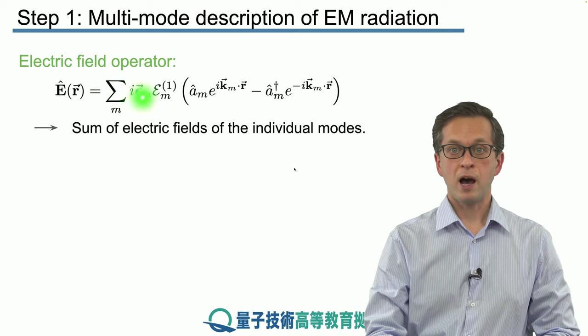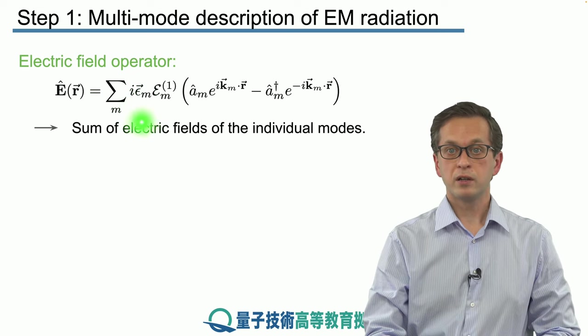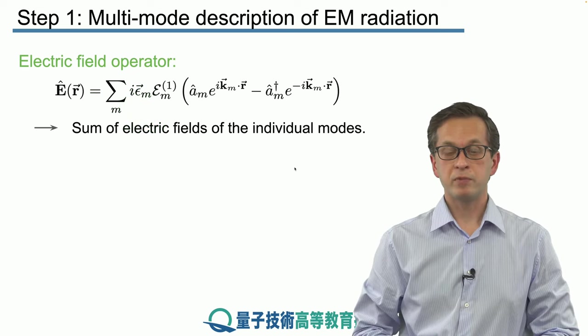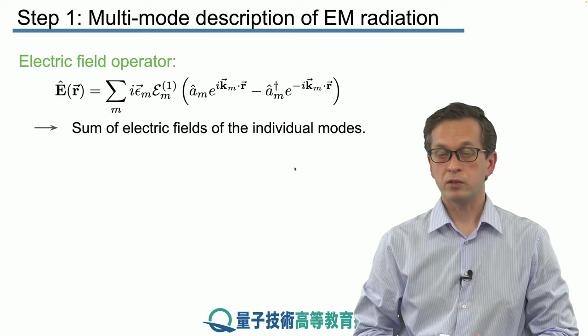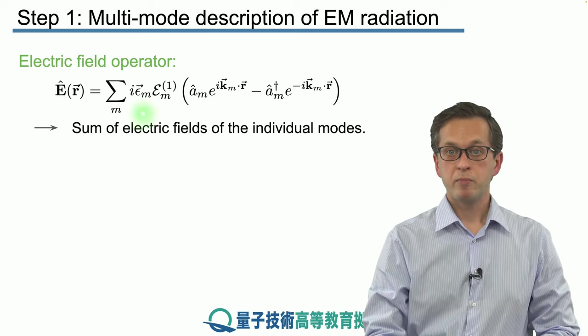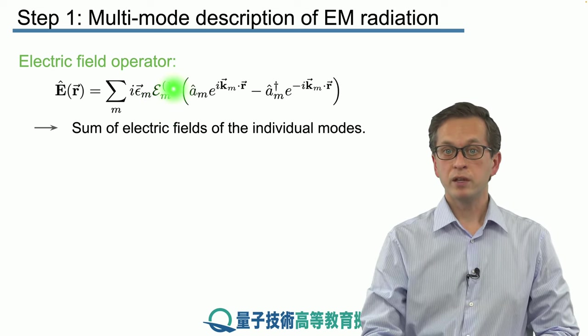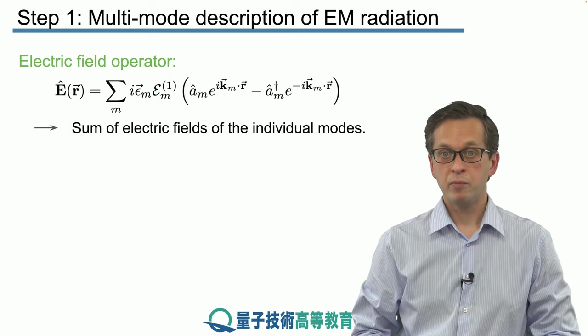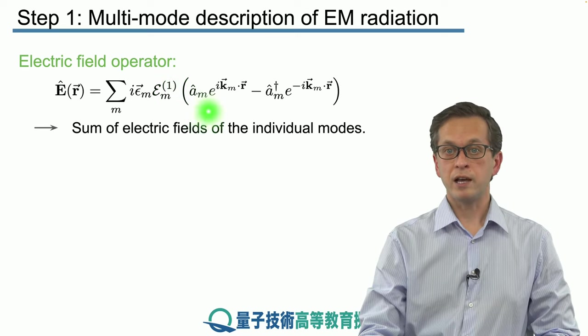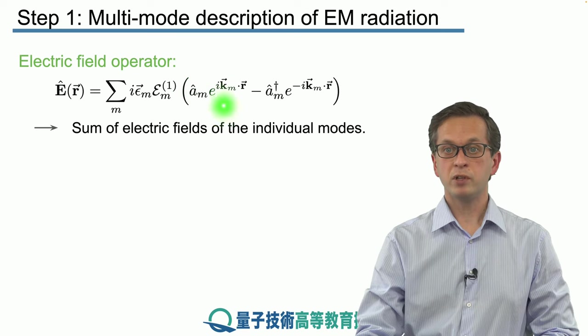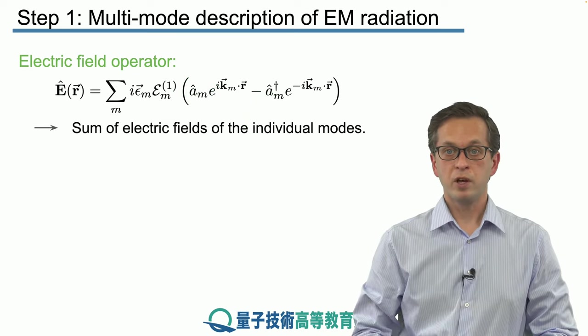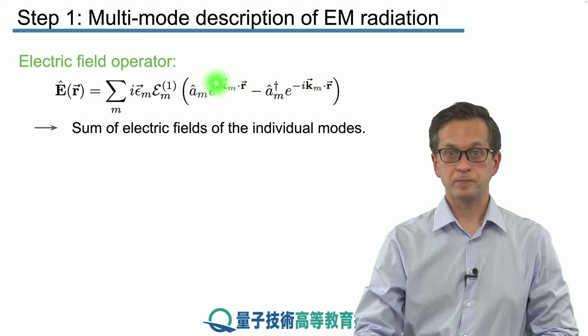To remind you, i is just a complex number. The vector epsilon m denotes the polarization vector for that mode. Capital epsilon m1 is the one photon amplitude for mode m, and then we've got our annihilation operator a m for the mode m, and creation operator a dagger m with their corresponding exponentials.